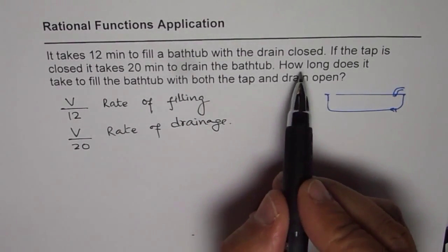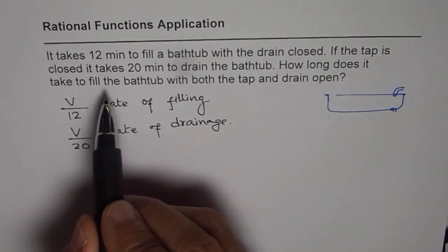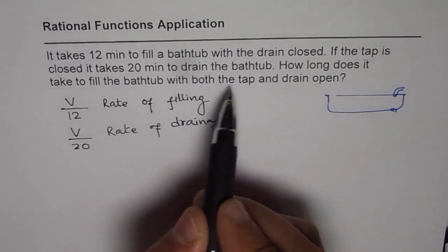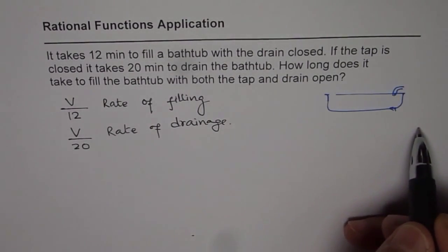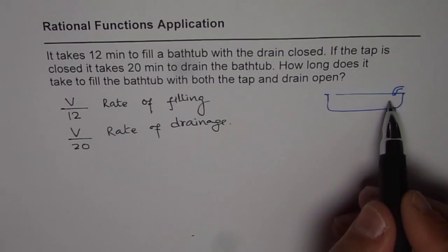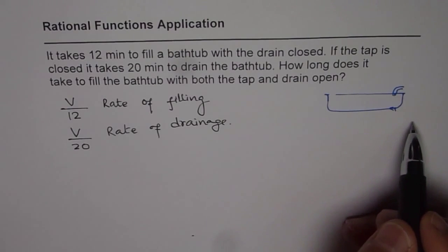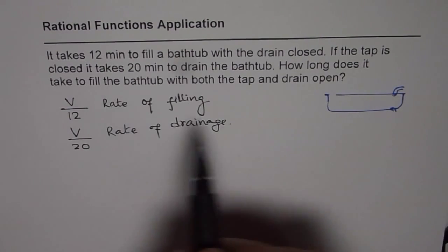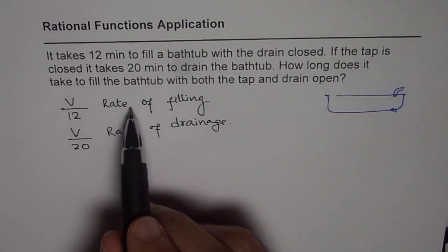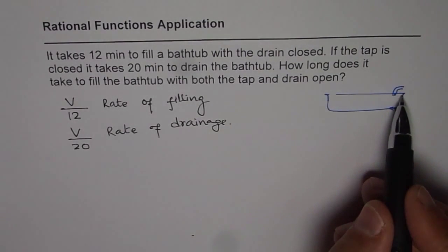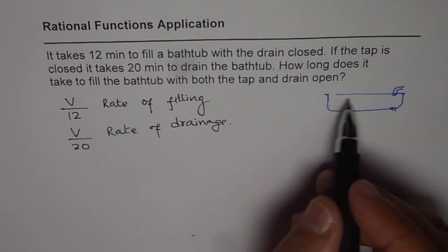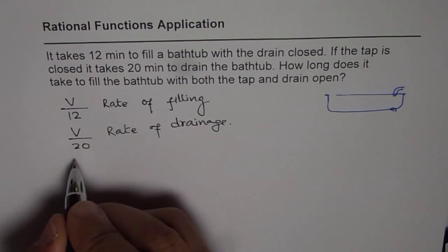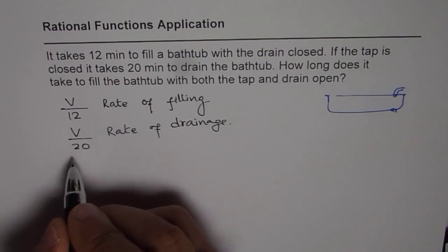Now the question is, how long does it take to fill the bathtub with both the tap and the drain open? That means tap is also open and drain is also open. So water is being filled and it is being drained out also. Since the draining rate is lesser than that of filling rate, ultimately it gets filled up. Now you need to find how much time will it take. So the equation becomes, when it fills up, let's say time to fill be T.